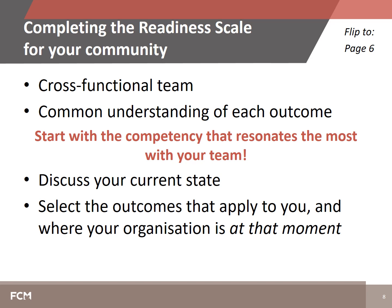The team should represent an understanding of finance, decision-making, and the planning and operations of each relevant service. If you're part of a small organization without formal departments, this may just be the CAO and the public works manager, for example. Then work together with your team to read through the competency tables and develop a common understanding of each outcome. You can start with the competency that resonates the most with your team — you do not need to go through the competencies in a specific order. They all work together.